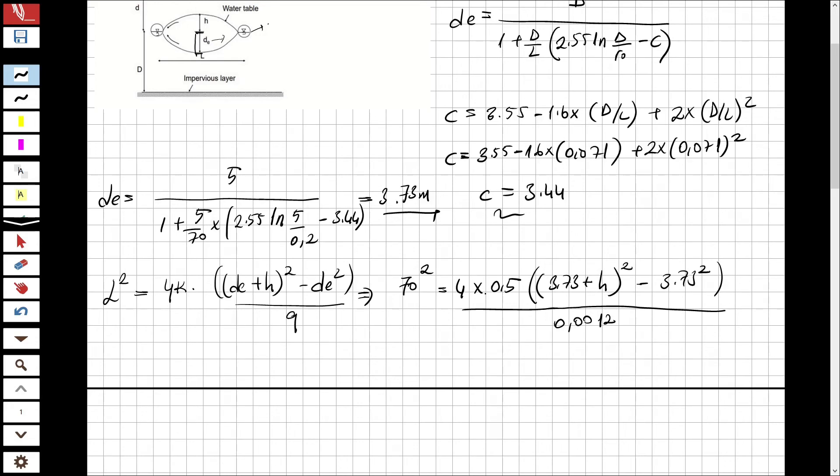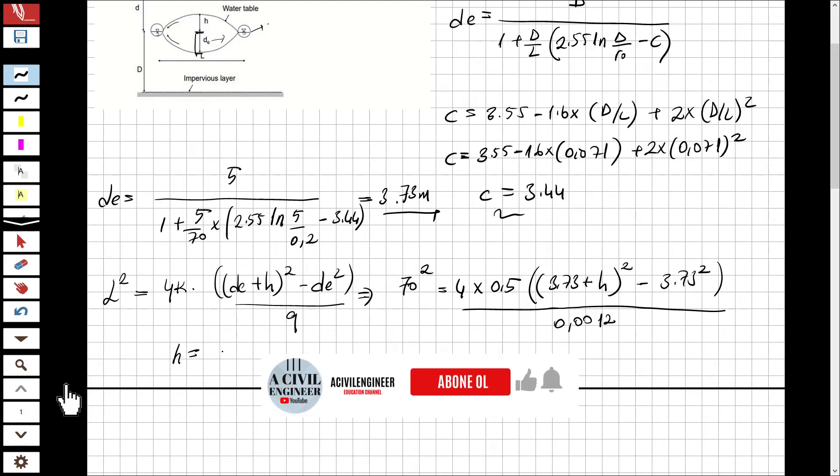Over 0.0012 because it is the q value. And from this when I take out h, h will be equal to 0.38.